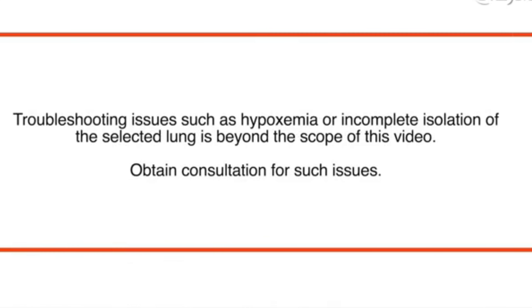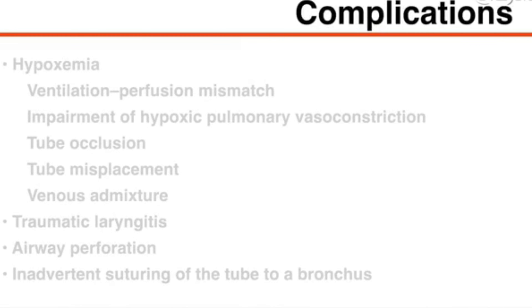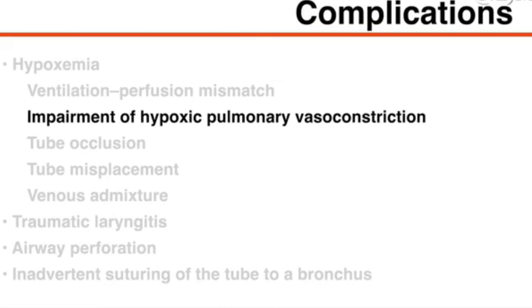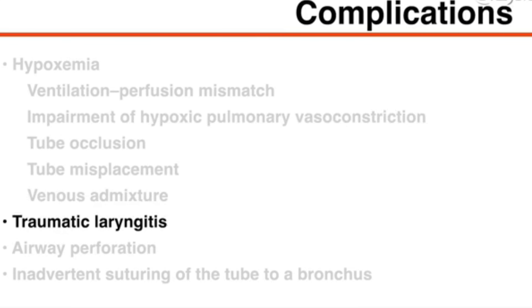Troubleshooting issues such as hypoxemia or incomplete isolation of the selected lung is beyond the scope of this video; obtain consultation for such issues. Major complications of double lumen endotracheal tube placement include hypoxemia from ventilation-perfusion mismatch, impairment of hypoxic pulmonary vasoconstriction, tube occlusion, tube misplacement, venous admixture, traumatic laryngitis, airway perforation due to trauma during tube placement or necrosis due to overinflation of the bronchial cuff, and inadvertent suturing of the tube to a bronchus.